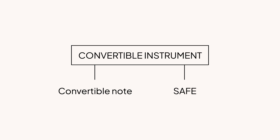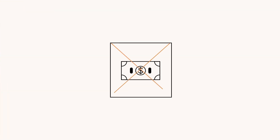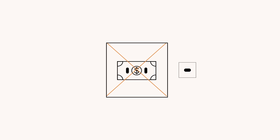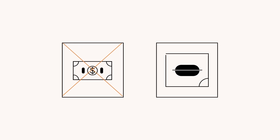Let's break down convertible instruments a little further. There are two essential kinds you need to know about: convertible notes and SAFEs. The key thing to know about a convertible note is that it's a debt instrument — money that your investor is lending you, basically like a loan you get from a bank. And eventually you'll have to pay it back with interest. But the way you pay it back typically isn't with cash — it's with shares in your company.